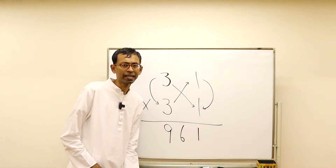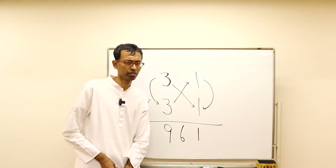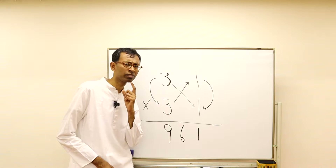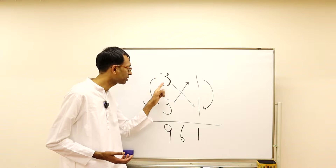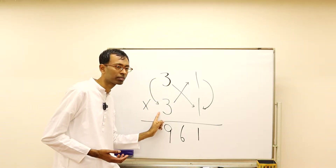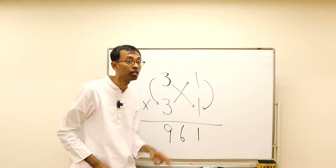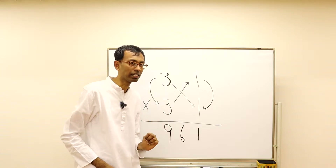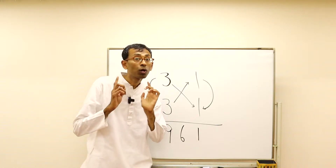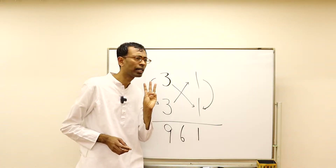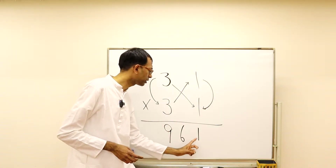A quick recap of what we learned last time. Suppose you have a two-digit multiplication — how many calculations did we actually do? Three calculations. Vertical multiplication on the left, then crosswise multiplication, and vertical multiplication on the right. This three came because we are multiplying a two-digit number with a two-digit number: two plus two is four, four minus one is three. That's why we do three calculations and write out a three-digit answer.